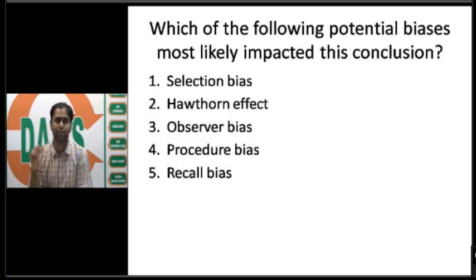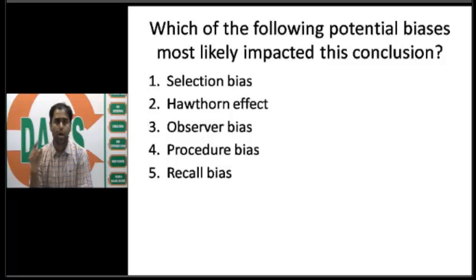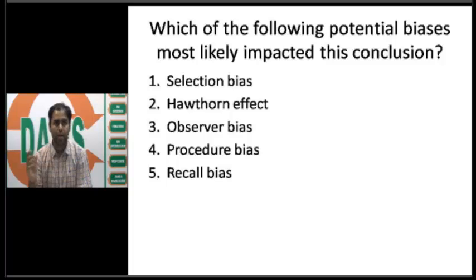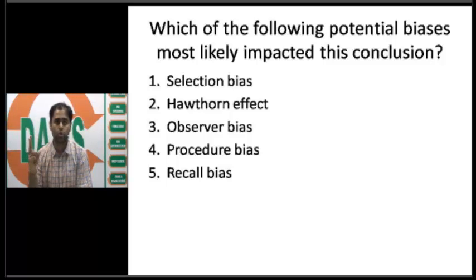The question asks which potential bias most likely impacted the conclusion. There are five bias types to consider. First, selection bias — remember, selection bias happens before data collection at the time of recruitment. In this question the problem is happening after data collection, so the answer cannot be selection bias. Second, the Hawthorne effect, also called attention-seeking bias, is a typical feature of cohort studies, and this is an interventional study, so it cannot be the answer either.